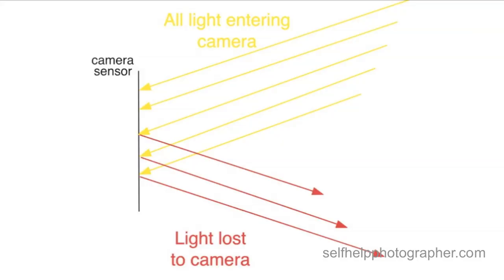And this is what ISO controls. Light sensitivity refers to how much of the light that comes into the camera is actually recorded for your image — not all of it is. When you take a photo, you've got light coming into the camera, and some of that light hits the camera sensor and bounces off without ever being recorded. This is lost light.